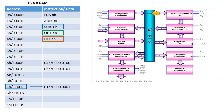At address 0H, we can see the instruction LDAH 8H. This LDAH instruction will find the data at memory address 8H. It reads that address and sends the data through the 16-to-8 RAM.